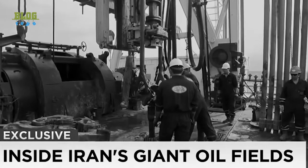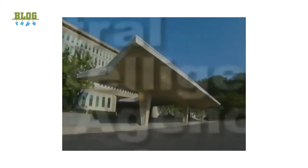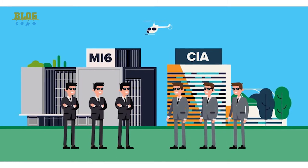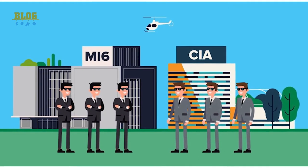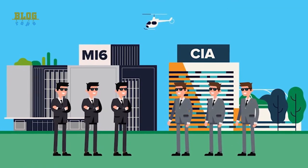Thus the CIA of the U.S. and MI6 of the UK orchestrated a coup to overthrow Mosaddegh's democracy in 1953.